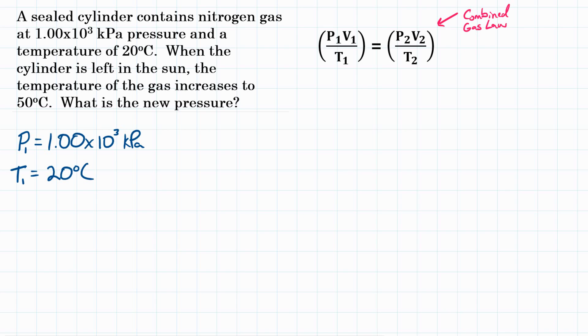Then at a different time after the cylinder had been in the sun, we got a different temperature, we'll call that T2, and that is 50 degrees Celsius. Then the problem asks, what is the new pressure? At the second time, P2, what is the pressure? That's what we're trying to find.